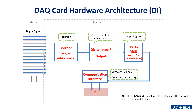In this chapter we will talk about the DAQ card hardware architecture for digital input and output. For the isolated DIO module, the first part is isolation. With the isolation function, it can support higher input/output voltage. The signal then transfers to digital output IC to identify the I/O status, next to FPGA to calculate and save the data, and finally through software polling or buffered transferring via the bus to the computer.